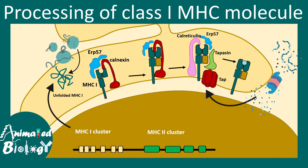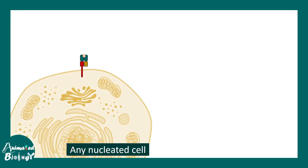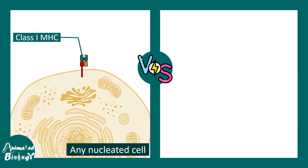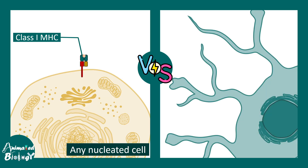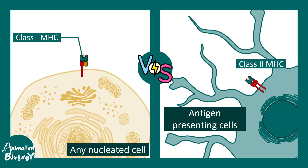In this video we'll talk about processing of the class 1 MHC molecule in more detail. In an earlier video we talked about this process as an overview; now we are going to delve into details of class 1 MHC and class 2 MHC presentation in much more elaborate fashion. Any nucleated cell would display its self antigens or endogenous peptides on class 1 MHC molecule, whereas antigen presenting cells such as dendritic cells would display exogenous antigen from a bacteria or pathogen on class 2 MHC molecule.